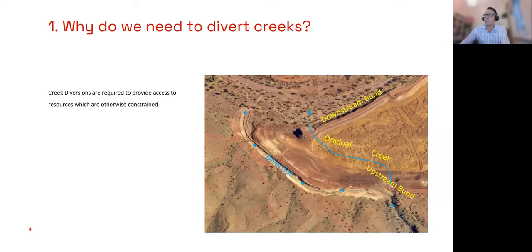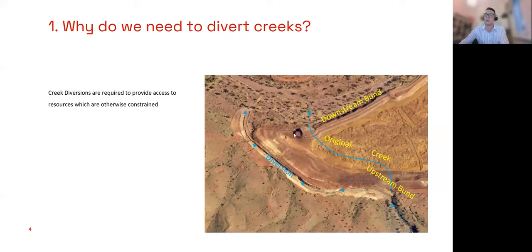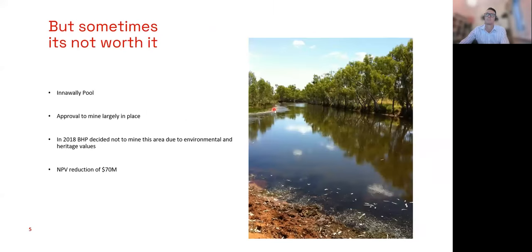Why do we need to divert creeks? Here's an example where a small creek runs through an area — the light blue line shows its original flow path — but there's a deposit of iron ore we want to access. We constructed an upstream bund to stop water from flowing into the pit area, then a channel around to the west takes that water into the larger creek, and a downstream bund stops the main creek from flooding into the pit. It's really just to get access to resources constrained by the creek.